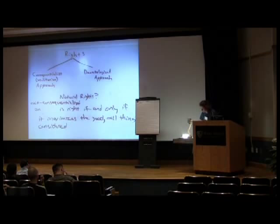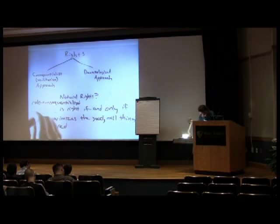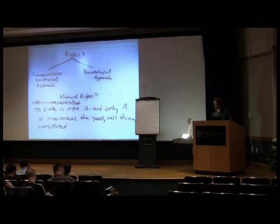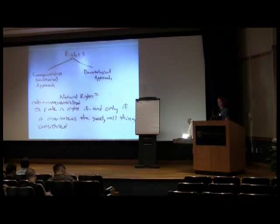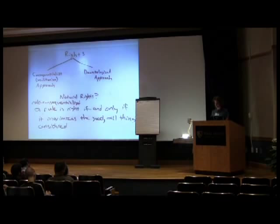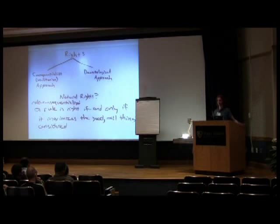This leads us to what is sometimes called rule consequentialism: a rule is right only if it maximizes the good, all things considered. So maybe a rule like 'do not kill' tends to maximize the good better than a rule saying 'sometimes kill' or 'kill a lot.' I think it's also important to keep in mind dispositions. If we internalize certain norms, they're dispositions — they're not just things we step in and out of and act on fleetingly. The importance of dispositions in our conduct cannot be emphasized enough.